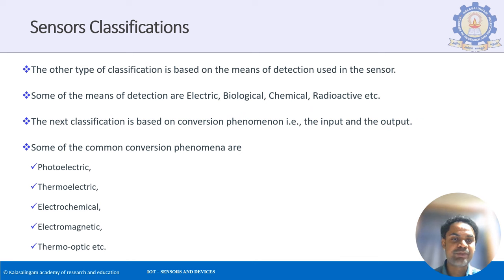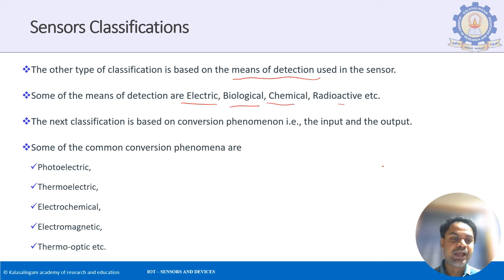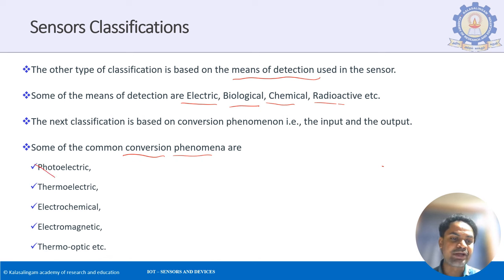Sensors can be further classified based on the means of detection: electric, biological, chemical, or radioactive detection. They can also be classified based on the conversion phenomenon, which could be photoelectric, thermal, electrochemical, or electromagnetic.